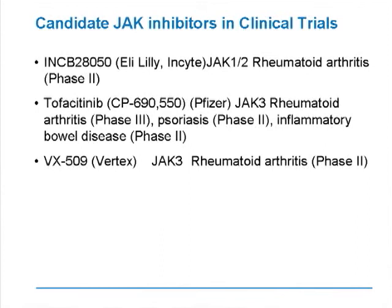Preclinical models have already told us that in diseases such as collagen-induced arthritis, using a JAK inhibitor such as tofacitinib, we can turn off bone-destructive capacity and ameliorate arthritis. This has given us strong grounds to move ahead into clinical development programs. There are several candidate JAK inhibitors in clinical trials, including tofacitinib, INCB-28050, and VX-509.